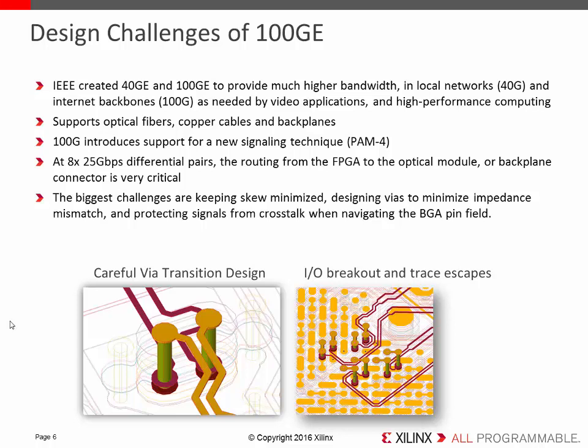We also have big challenges with crosstalk. If you're using a specific FPGA, the high-speed transceivers have a particular ball-out, so the pin locations are fixed. But how you choose to route those signals out from the BGA — the I/O breakout and trace escape — is within your control. Ensuring crosstalk is kept to a minimum is very important for 100G Ethernet. Now I'll pass over to Brandon to take you through the rest of the presentation.